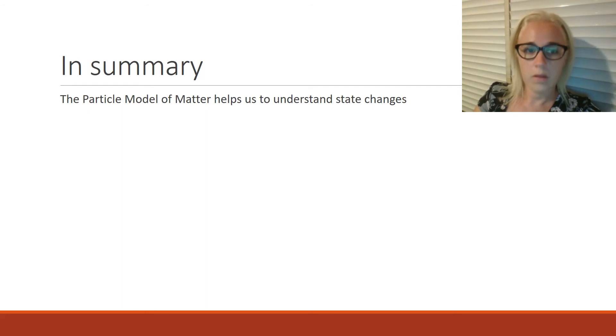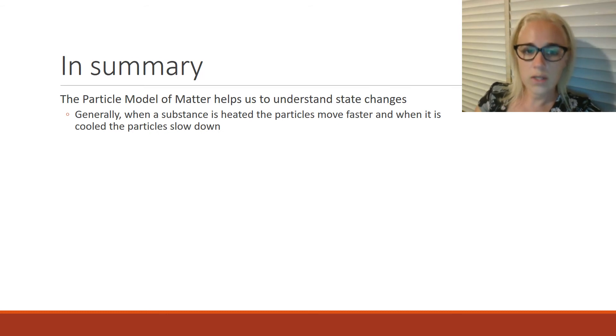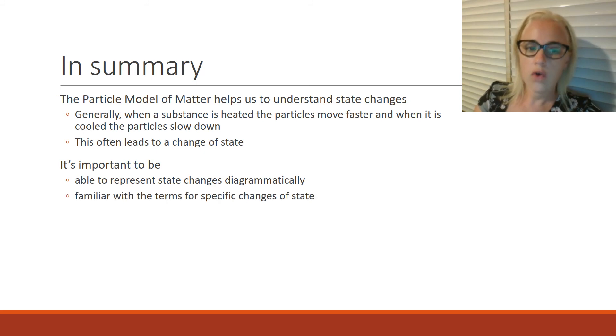To summarise, the particle model of matter helps us to understand physical state changes. Generally, when a substance is heated, the particles move faster, and when it's cooled or when heat is removed, the particles slow down. This usually will lead to a change of physical state. It's important to be able to represent state changes diagrammatically and also to be familiar with the terms for specific changes of state.